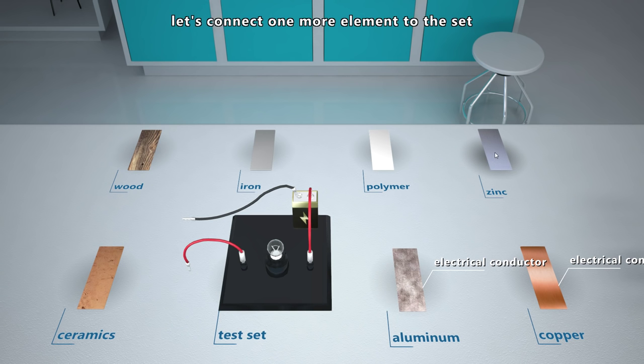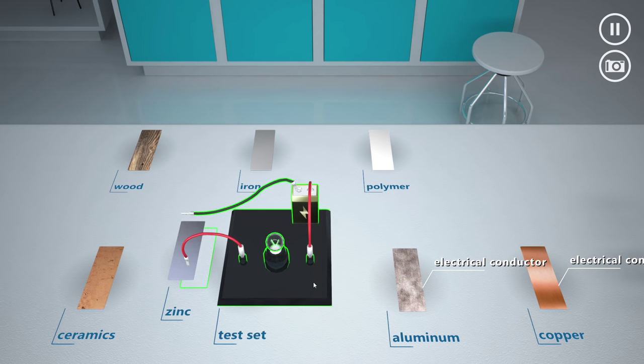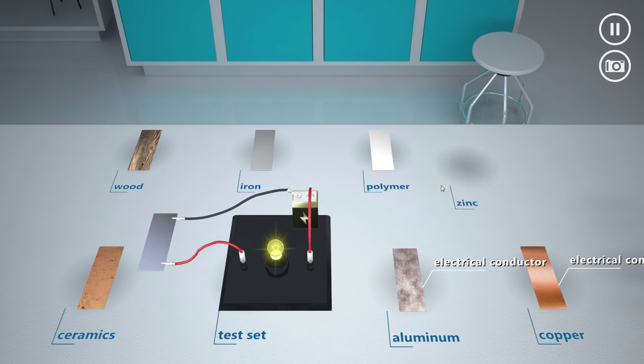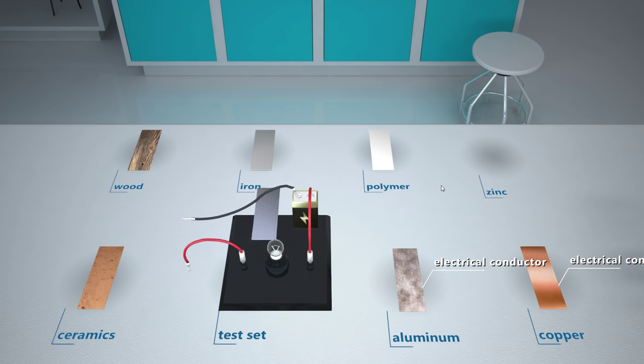Let's connect one more element to the set. Great. The bulb has shined a light again. Zinc is a metal that is also a conductor. In the air, however, it passivates. Nowadays, zinc is mainly used for coating steel plates. This is called galvanized steel, which is resistant to corrosion.